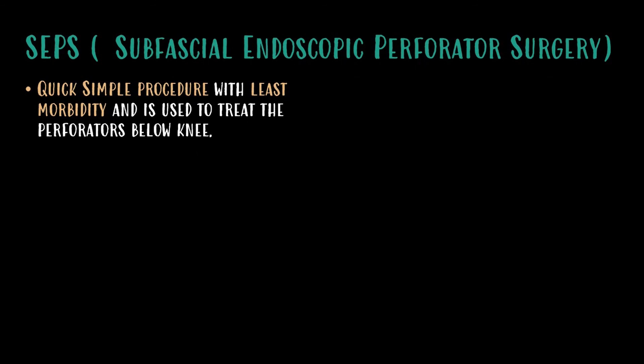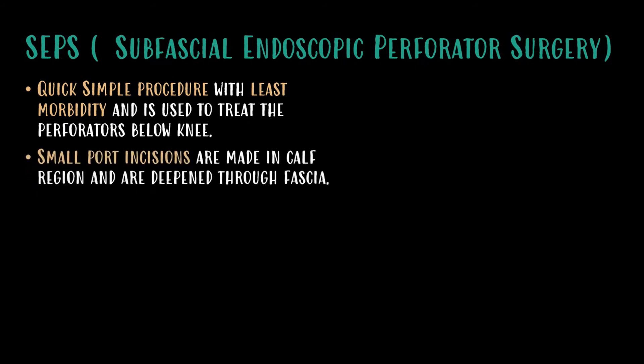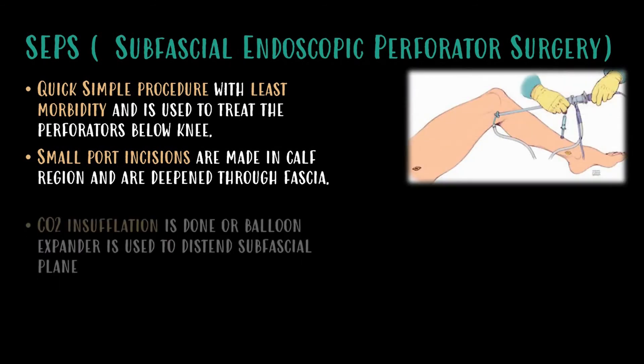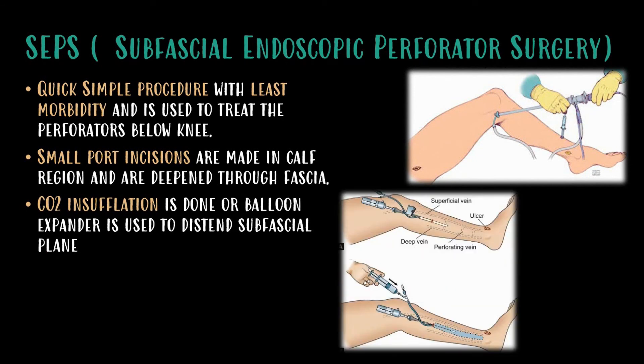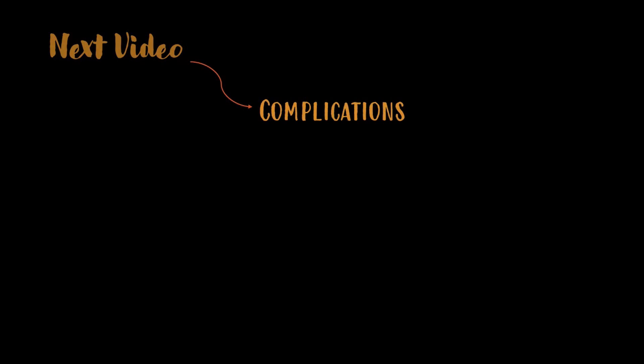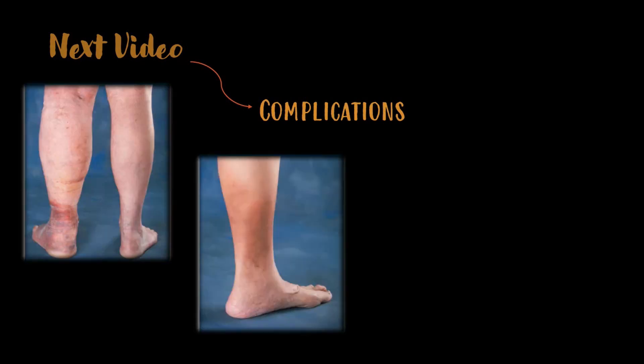Subfascial endoscopic perforator surgery (SEPS) is a quick and simple procedure with least morbidity, used to treat perforators below the knee. Small port incisions are made in the calf region and deepened through the fascia. Carbon dioxide insufflation or a balloon expander is used to distend the subfascial plane, and the perforators are then identified and ligated. The next video will be the last in the varicose vein series, discussing complications in detail.